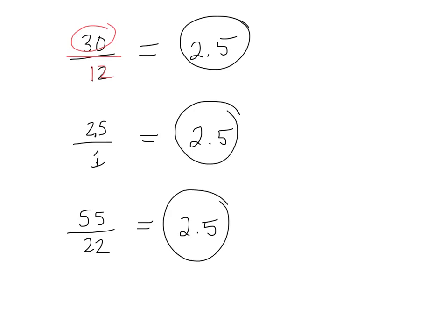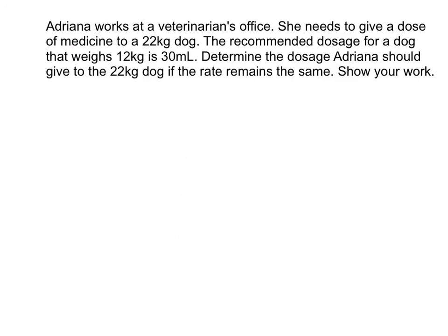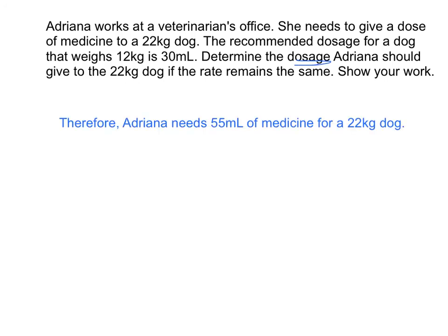Now that you know this information, do you think you could figure out how many milliliters you might need for a 25kg dog or a 50kg dog? Try it. Let's answer the question: the question asked us to determine the dosage that Adriana needed if the dog weighed 22kg. Therefore, Adriana needs 55ml of medicine for a 22kg dog. Can you think of other strategies you could have used to solve the same problem? Check out our playlist to find different solutions for solving the same problem.